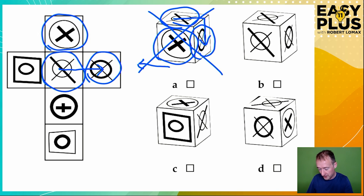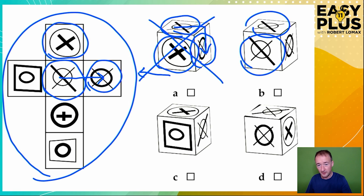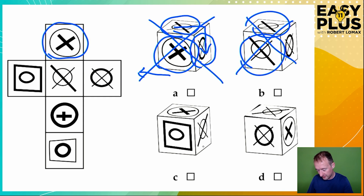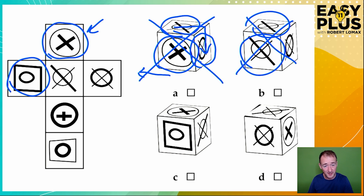What about B? Option B has got our central figure twice, yet it only appears once in our net. So again, option B cannot be the answer. Option C has it here. And it has the helicopter landing point above it, as we see here. And it has this thing to the left of it round the corner, as we see here. So this looks quite plausible — we can certainly leave that one in for the moment.